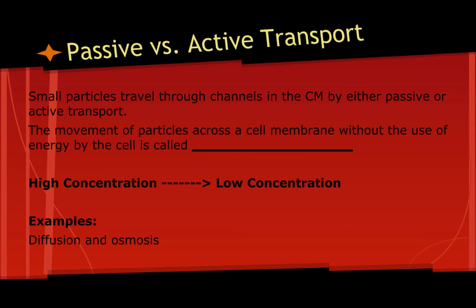Now let's introduce two new terms: passive and active transport. Small particles travel through channels in the cell membrane — channels meaning a little path or passage for particles to pass through. The movement of particles across the cell membrane without the use of energy by the cell is called passive transport. We've already talked about examples of this: diffusion and osmosis.